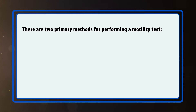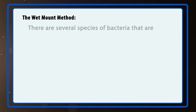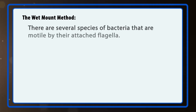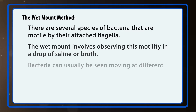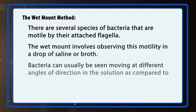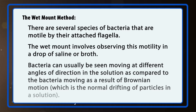There are two primary methods for performing a motility test: the wet mount method or direct test, and the motility media method. There are several species of bacteria that are motile by their attached flagella. The wet mount involves observing this motility in a drop of saline or broth. Bacteria can usually be seen moving at different angles of direction in the solution, as compared to Brownian motion, which is the normal drifting of particles in a solution.